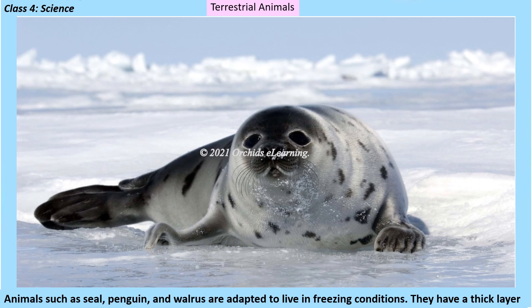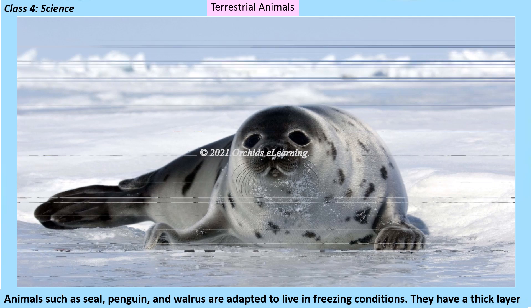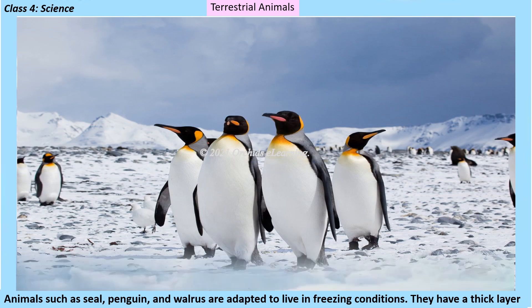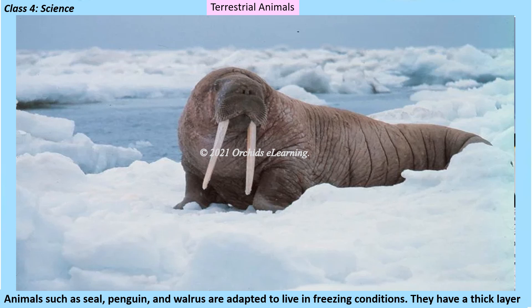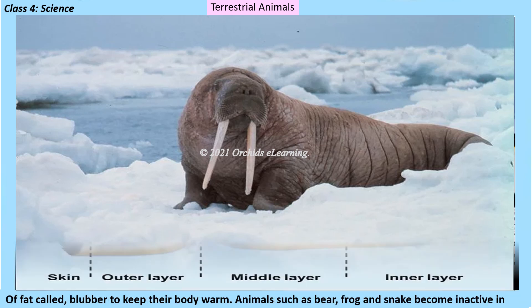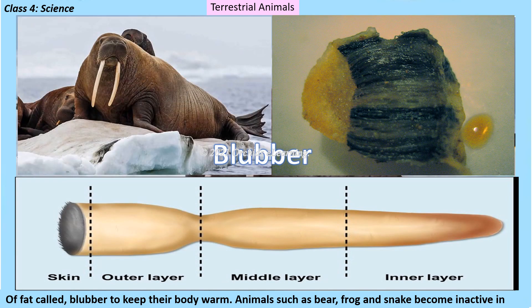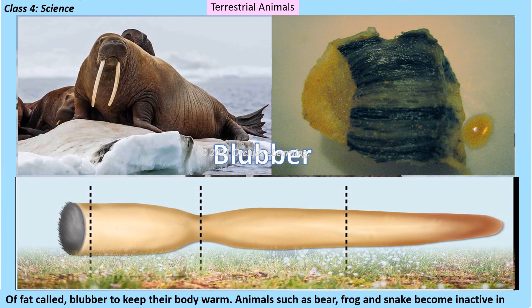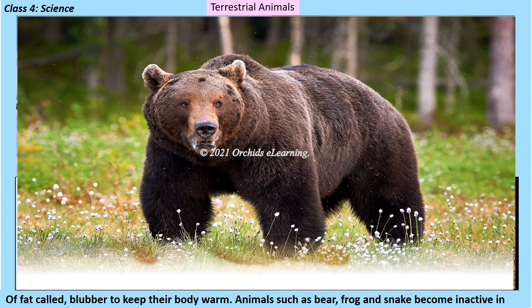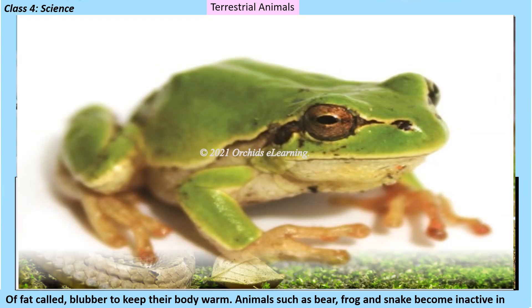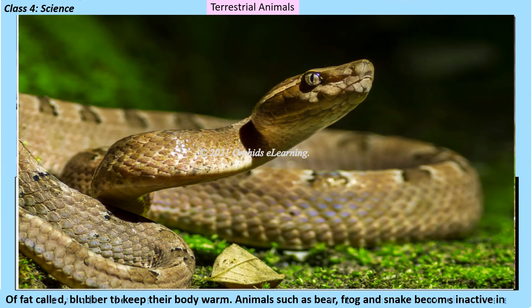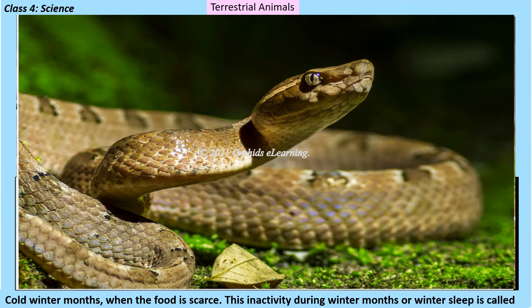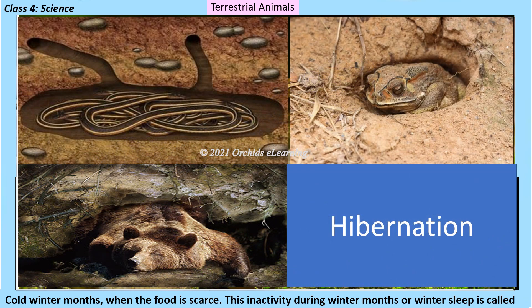Animals such as seals, penguins, and walrus are adapted to live in freezing conditions. They have a thick layer of fat called blubber to keep their body warm. Animals such as bears, frogs, and snakes become inactive in cold winter months when food is scarce. This inactivity during winter months, or winter sleep, is called hibernation.